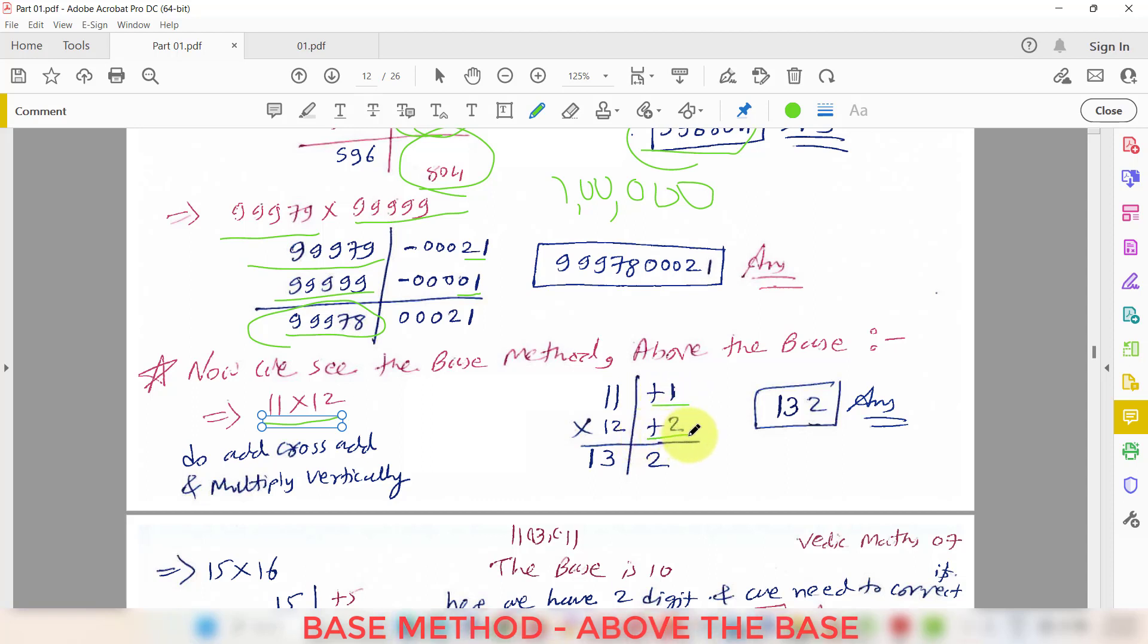Similarly 18 times 19. So 18 is excess of 10 by how much? 8. 19 is excess of 10 by how much? 9. So 18 plus 9 that is 27 or 19 plus 8 that is also 27 and 8 times 9 is 72. So we will keep the 2 as it is. 27 plus this 7 you have to add. So 27 plus 7 that is 34. So 342 will be our final answer.